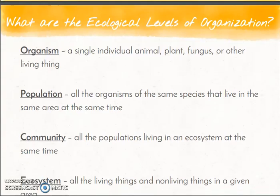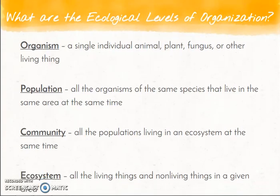These are the same terms written out as technical definitions. The previous slide used pictures; this slide gives the written technical definition of each term. An organism is a single individual living thing — it might be an animal, plant, fungus, or microscopic organism of some other type. A population is all of the organisms of the same species that live in an area at the same time. Once you add in other species, now you have a community — all the populations living in an ecosystem at the same time.